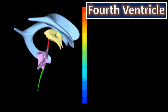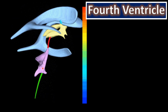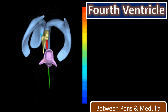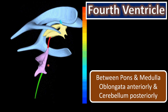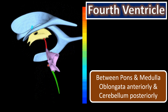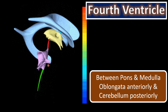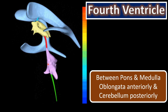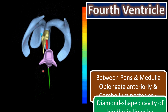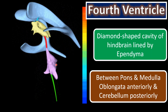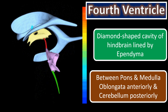Now moving to the fourth ventricle. The fourth ventricle is a cavity present between the pons and the medulla oblongata — pons and medulla oblongata are present anteriorly, and posterior to this fourth ventricle you can identify the cerebellum. It is a diamond-shaped cavity of the hindbrain, lined by ependyma.